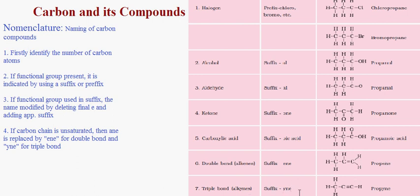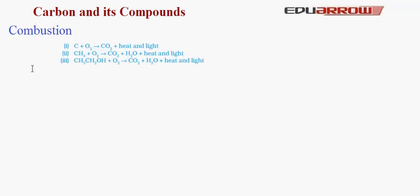Let us now talk about combustion. When carbon compounds are reacted with oxygen they produce water, carbon dioxide, and heat and light energy. For example, when carbon reacts with oxygen it forms CO₂ and heat and light. When methane (CH₄) reacts with oxygen we get CO₂, water, and heat and light energy. When ethanol (CH₃CH₂OH) reacts with oxygen we get CO₂, water, and heat and light energy. So whenever any carbon compound is treated with oxygen, we always get CO₂, water, and heat and light energy.